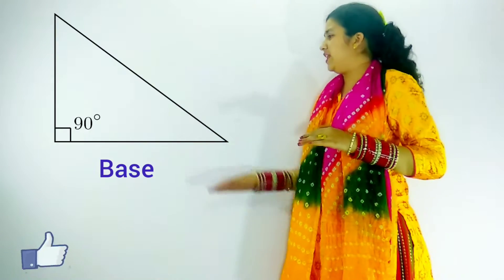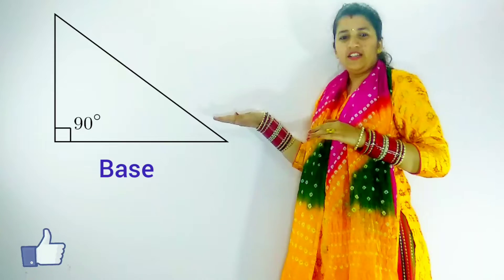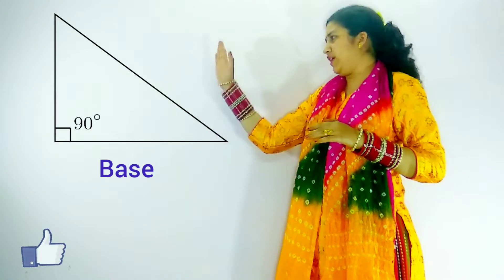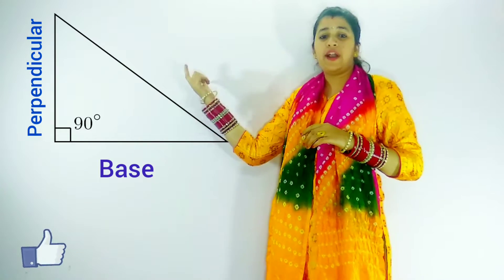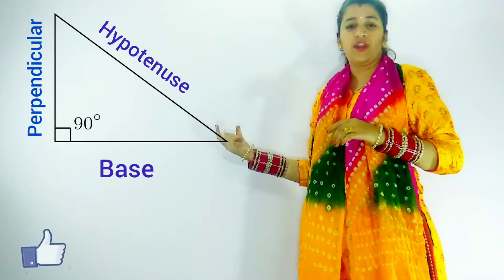In a right triangle, we have a base that is the horizontal line and we have the perpendicular that is the vertical line. The line which joins the perpendicular and the base is known as hypotenuse.